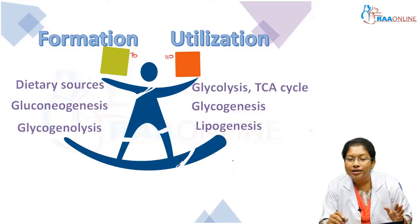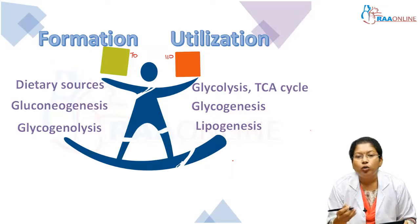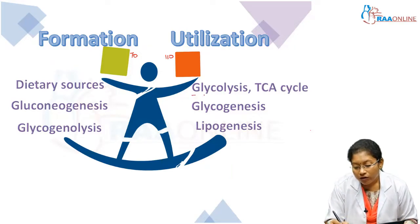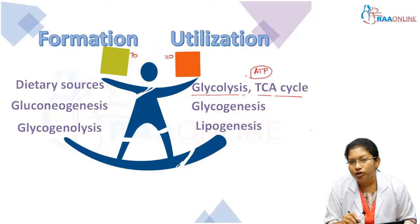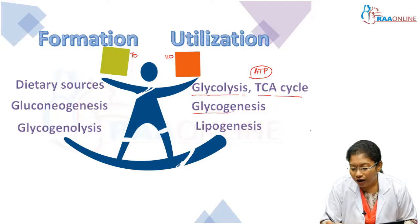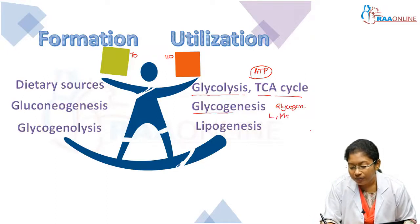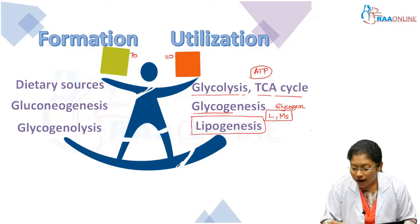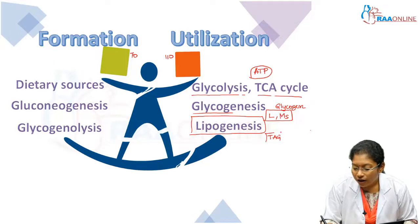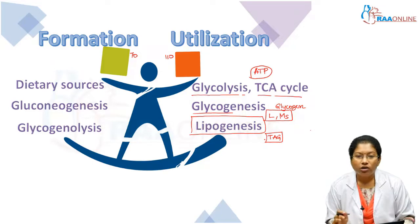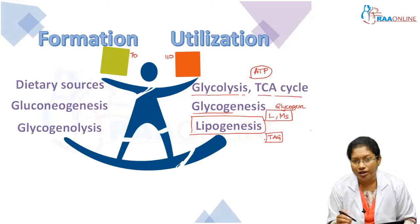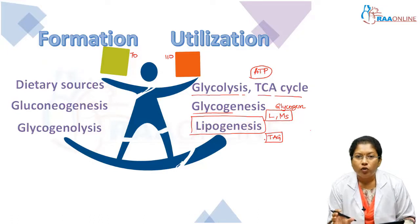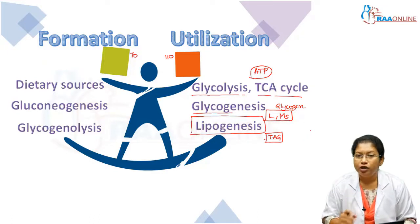Whenever we eat, the excess glucose is taken up by cells through the hormone insulin and goes for ATP production. Once ATP is produced, excess glucose may be stored as glycogen in the liver and muscles. Beyond that, excess glucose may also be stored as triacylglycerol in adipose tissues. These three processes — ATP production, glycogen storage, and fat storage — constitute glucose utilization, and formation and utilization must be balanced to maintain blood glucose levels.